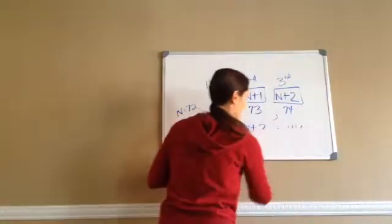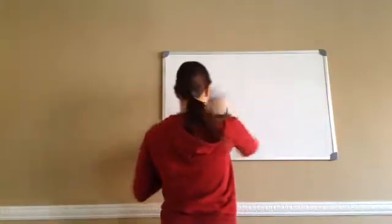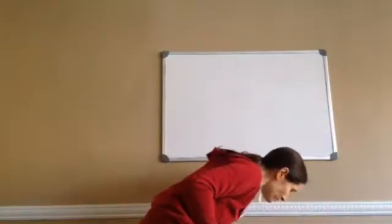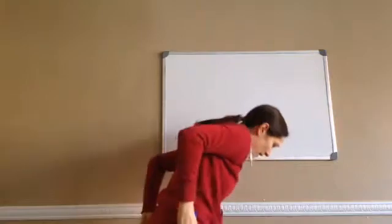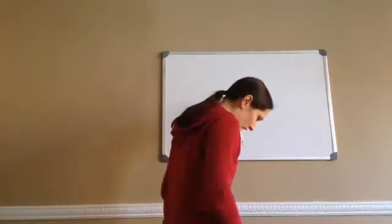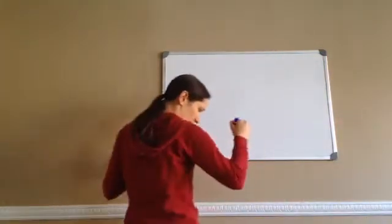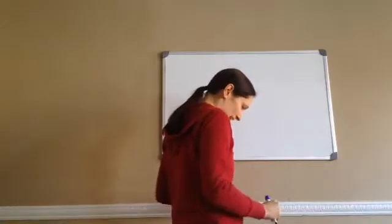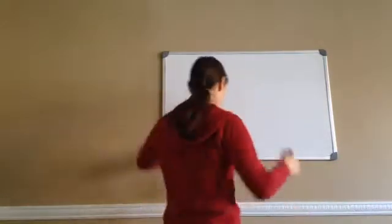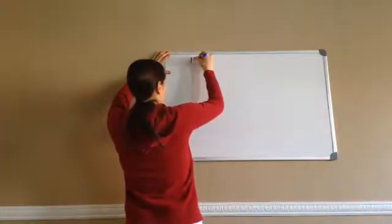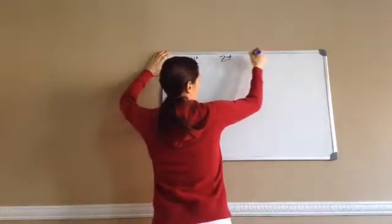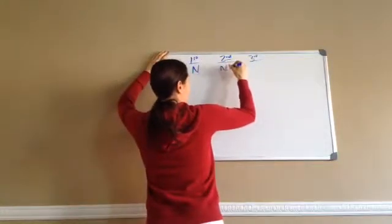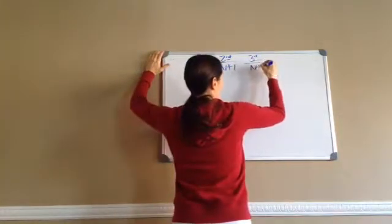Let's do another one. Let's look at this next problem. Again, I need to set up my integers. The first one will always be n, the second will always be n plus 1, and the third will be n plus 2. Find three consecutive integers such that twice the sum of the first two is two less than three times the third.